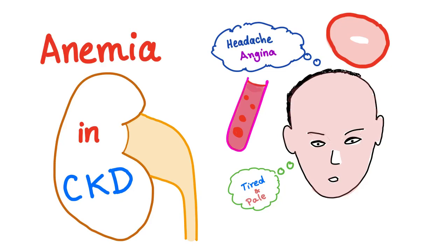Welcome back to Medicosis Perfectionalis. Let's continue our talk on normocytic anemia. Today's topic will be anemia and chronic kidney disease. In the good old days we used to call it kidney failure or chronic kidney failure. Now we call it chronic kidney disease because we do not like failure.